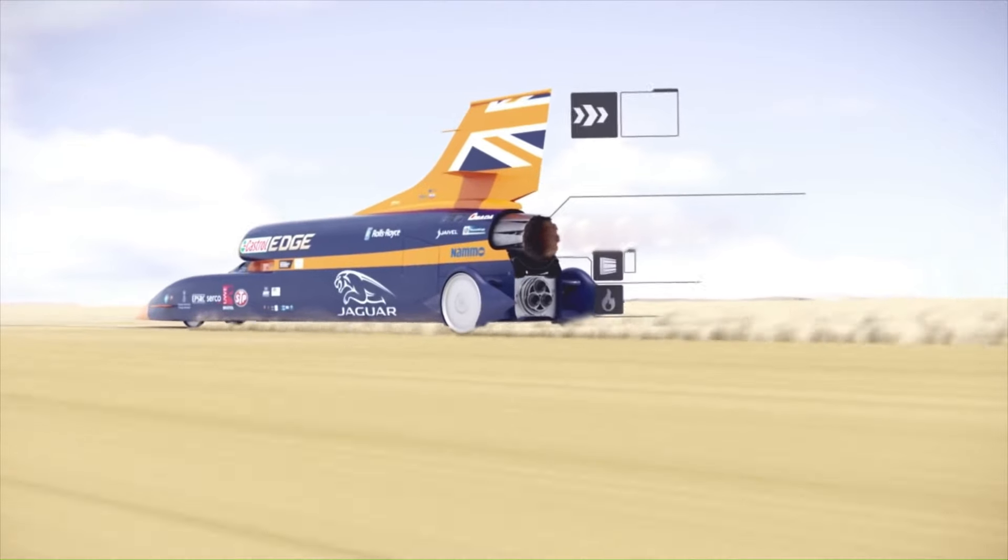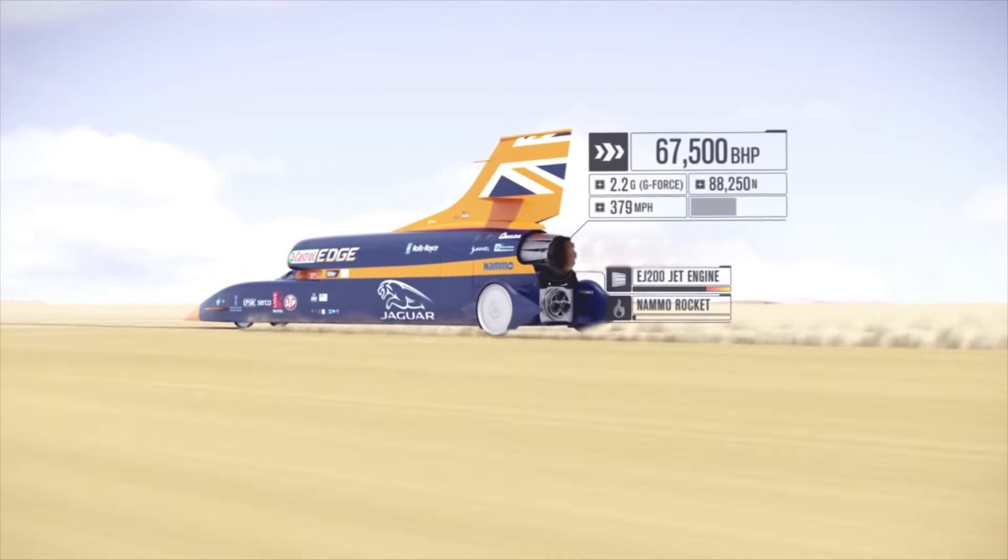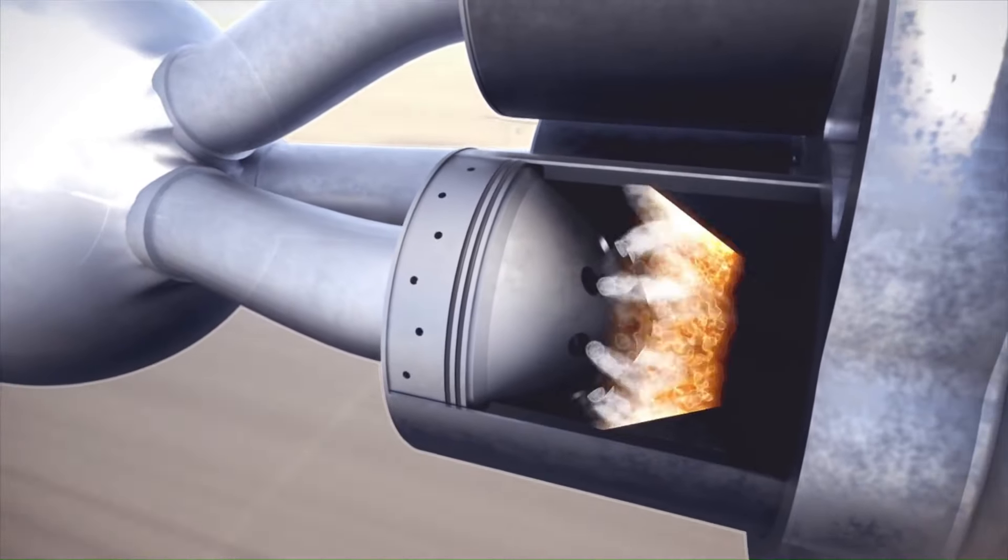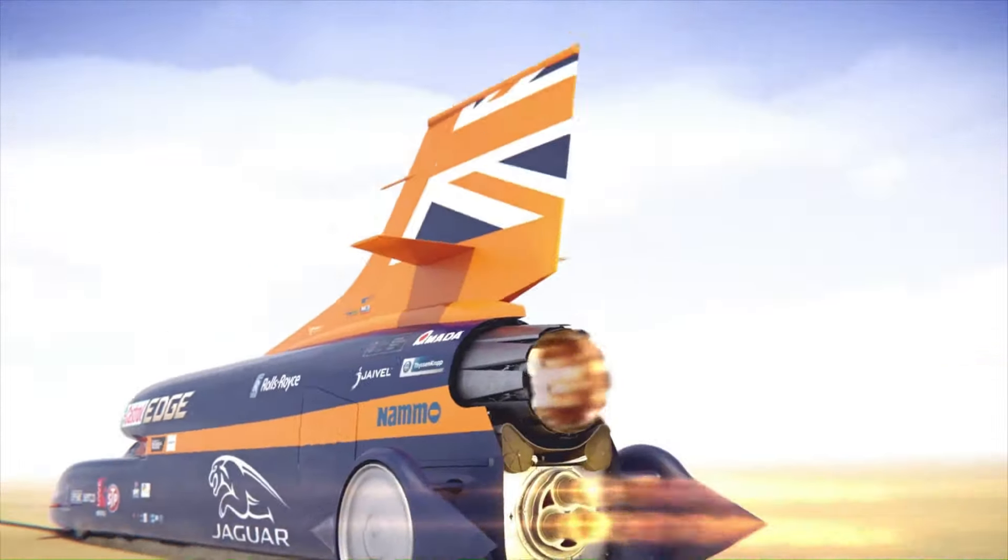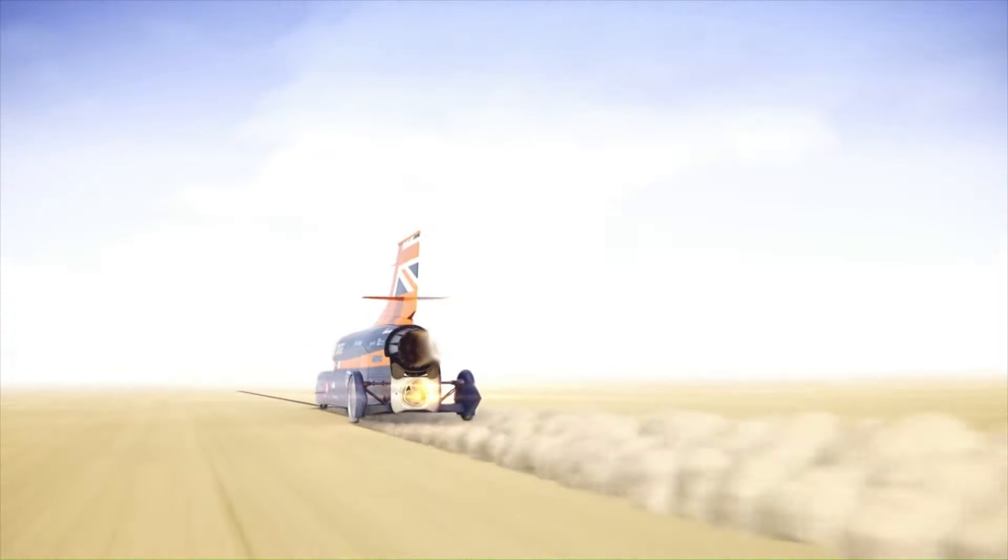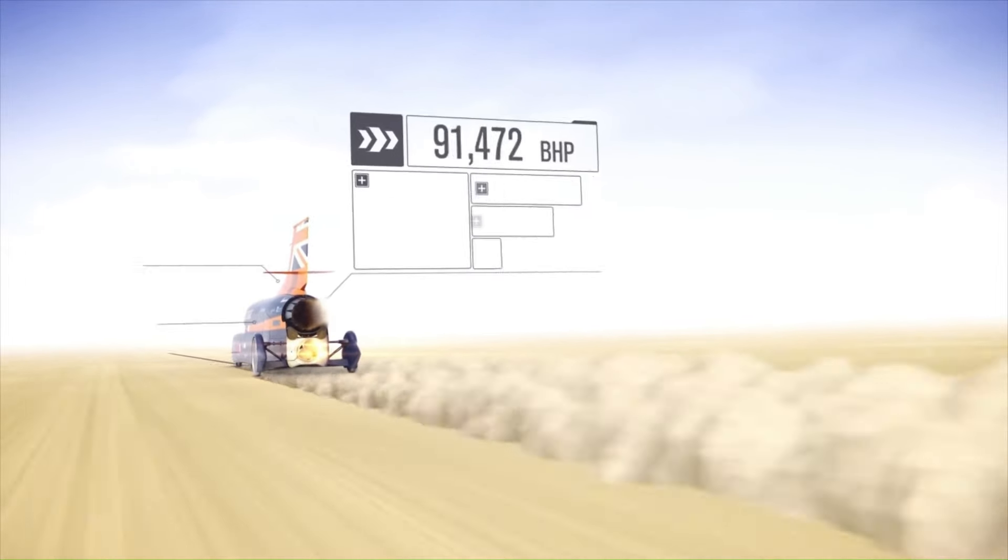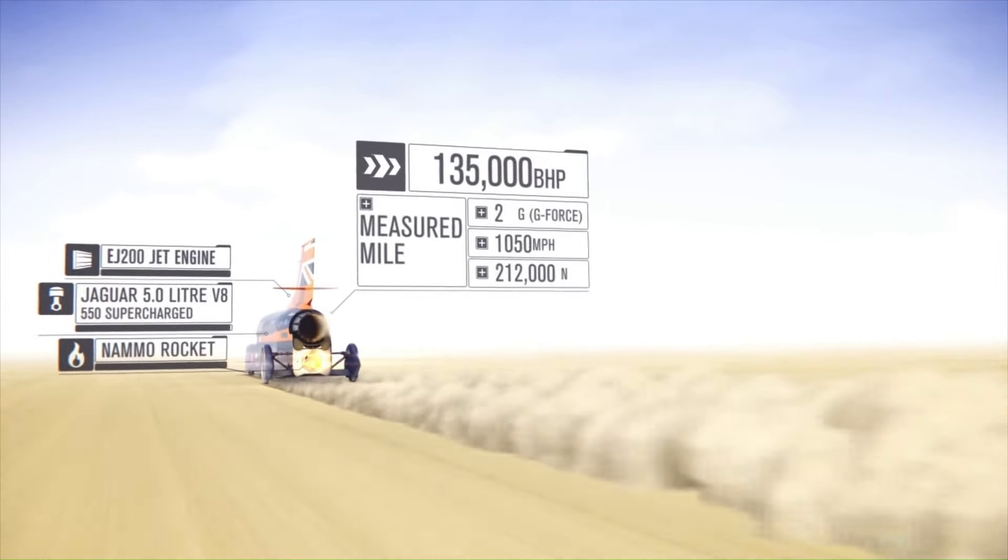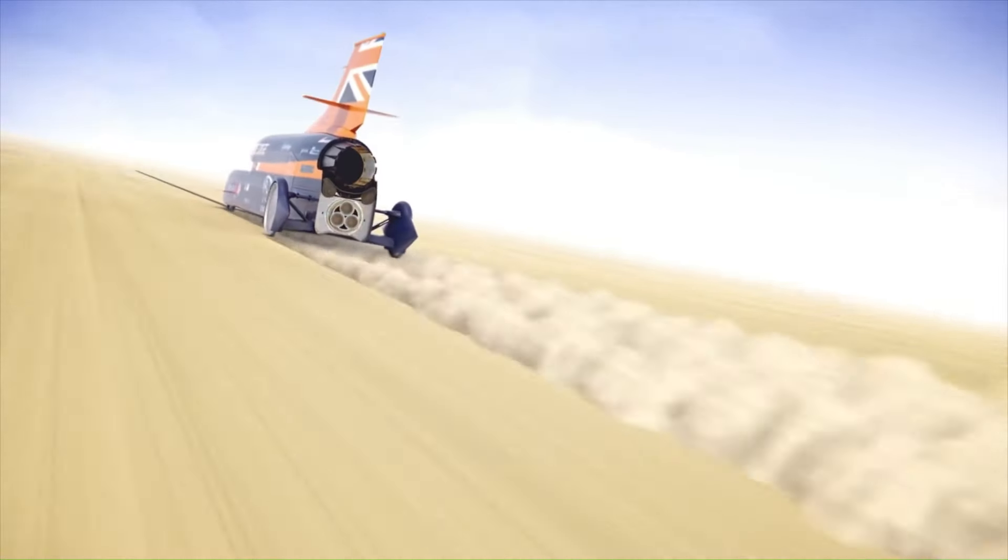The driver, Andy Green, is the same person who set the current land speed record in 1997. The car uses liquid oxygen and rocket-grade kerosene for its rocket engine, similar to some spacecraft.